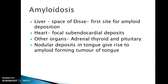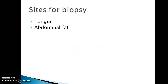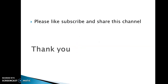In the liver, the space of Disse is the first site of amyloid deposition. In the heart, it can appear as sub-endocardial deposits. Other organs affected include adrenal, thyroid, and pituitary. Nodular deposits in the tongue give rise to amyloid-forming tumors of the tongue. Sites of biopsy include tongue and abdominal fat.